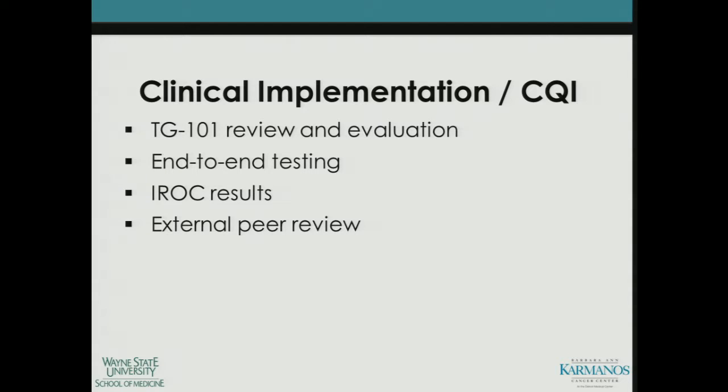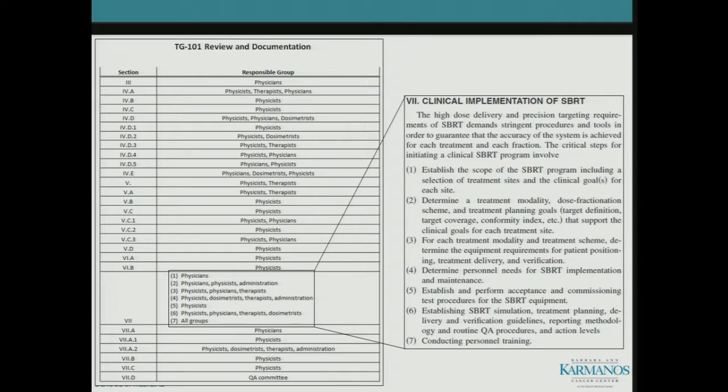We took TG 101 apart and really dug into the details of it. This is just the front-page outline of a document that we put together where we assigned each individual group all the sections of TG 101 to really flesh this out. The entire document is obscenely long — just going through and making sure that we are making good on all the recommendations of TG 101. I've broken out Section 7 here as an example of how we assigned individual tasks to individual groups and then compiled a complete document to make sure we were living up to these recommendations.